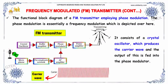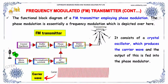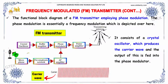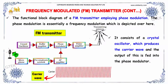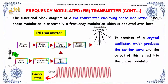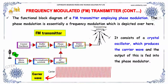The functional block diagram of a FM transmitter employing phase modulation is shown here. Phase modulation is essentially a frequency modulation, as depicted here. It consists of a crystal oscillator which produces the carrier wave, and the output of this is fed to the phase modulator.